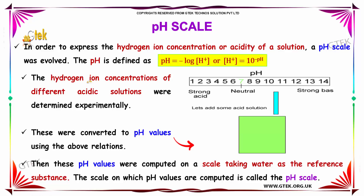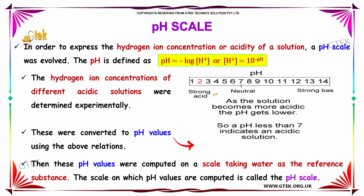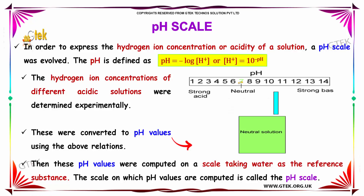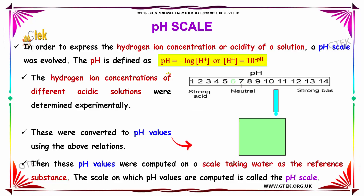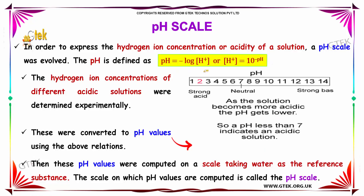We will study about the pH scale. In order to express the hydrogen ion concentration — that is, if a solution is acidic or basic — the pH scale was evolved. The pH is defined as the negative log of H+ ion concentration. The hydrogen ion concentrations of different acidic solutions were determined experimentally, converted to pH values using the above relations, and then computed on a scale taking water as the reference substance. The scale on which pH values are computed is called the pH scale.